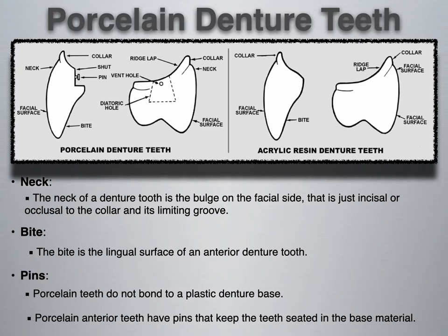The biggest difference between porcelain and acrylic teeth is that since porcelain teeth don't bond to the plastic denture base, you'll find pins. Some porcelain anterior teeth have pins that keep the teeth seated in the base material. Both types of teeth tend to have a neck — the bulge on the facial side just incisal or occlusal to the collar — and a bite, which is the lingual surface of an anterior denture tooth.